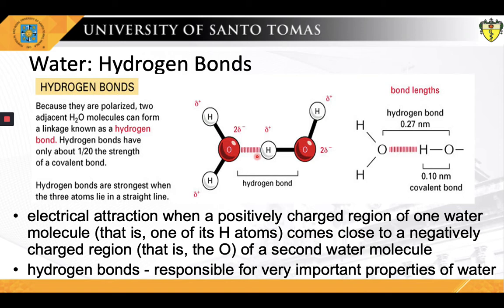These interactions are caused by the electrical attraction when a positively charged region of one water molecule — that is, its hydrogen atoms — comes close to a negatively charged region, that of oxygen, of a second water molecule. Although hydrogen bonding is a relatively weak attraction compared to the covalent bonds within the water molecule itself, it is responsible for a few of water's physical properties, including its relatively high melting and boiling point temperatures, resulting in more energy required to break the hydrogen bonds between water molecules.